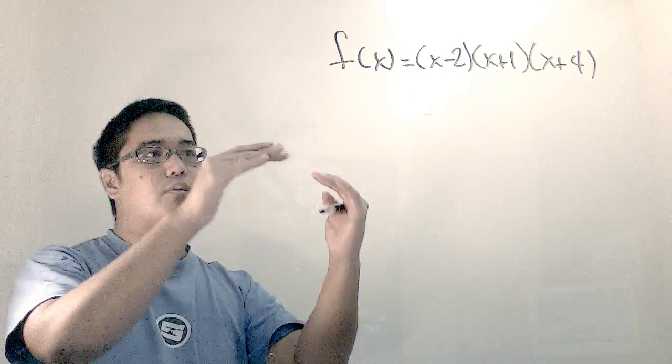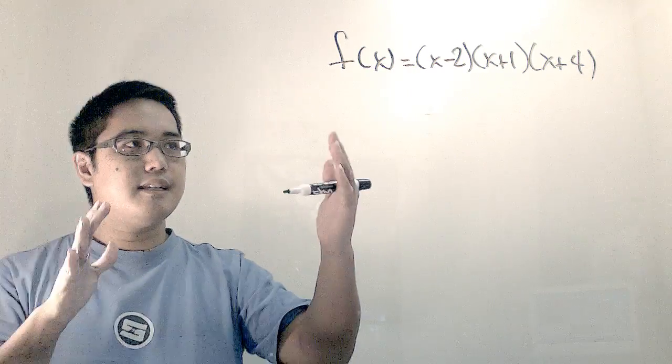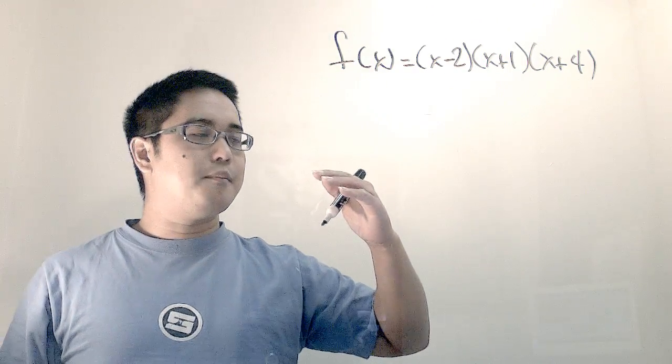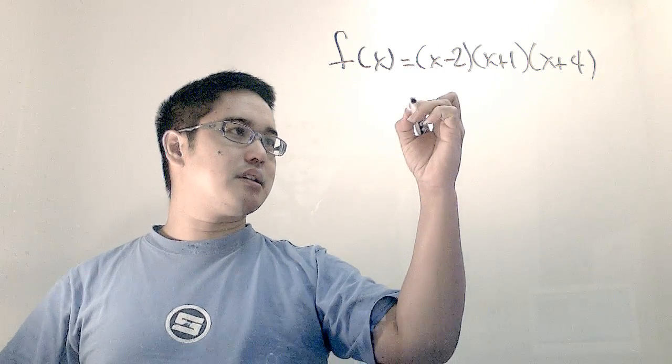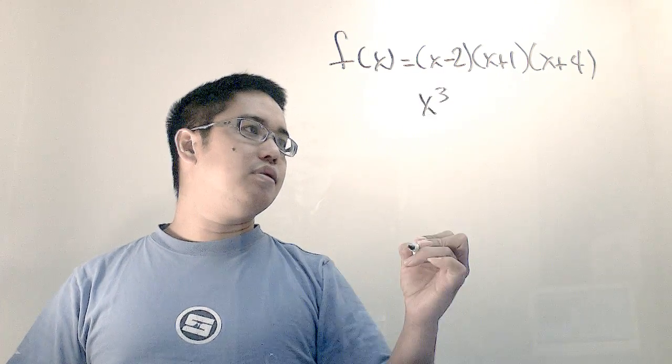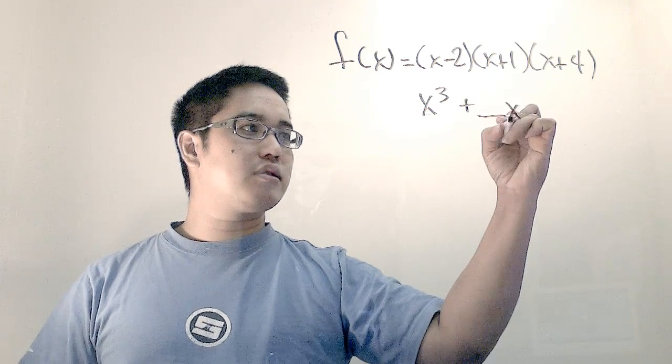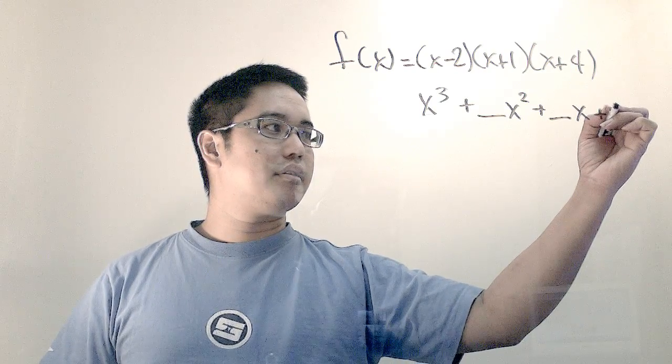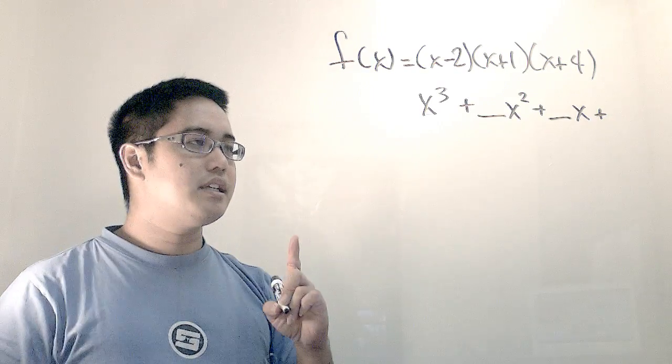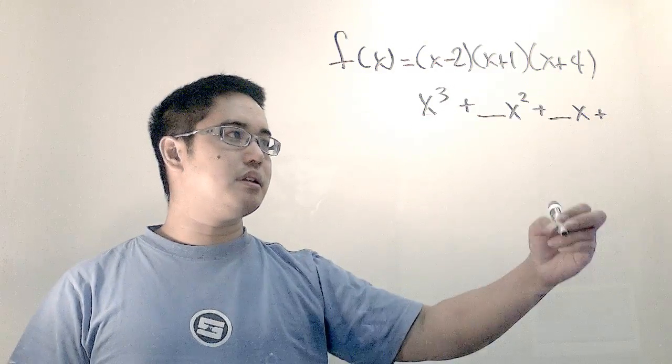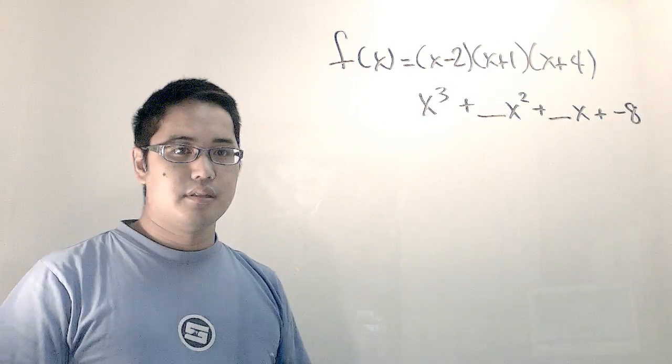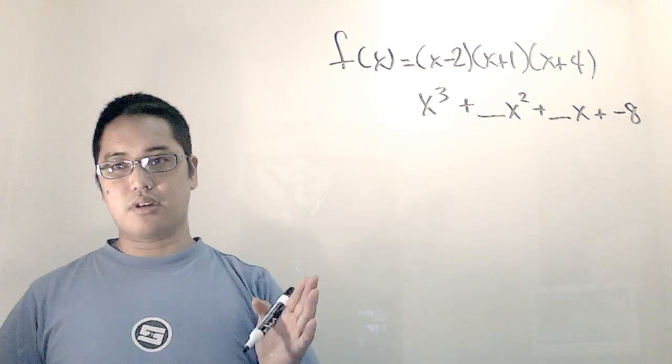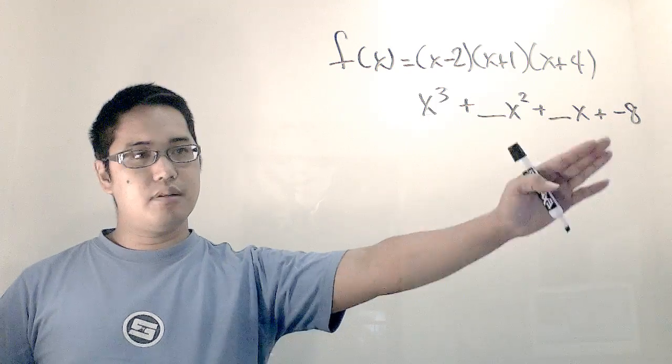The way we can graph this is we can find - this is a polynomial function that usually in standard form looks something like this: x cubed plus something x squared plus something x plus some number out here. In fact, I actually developed a technique for figuring out at least what that number is. It's negative 8.